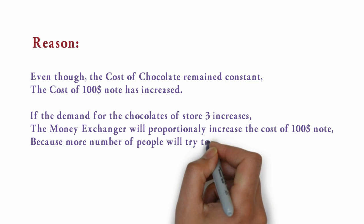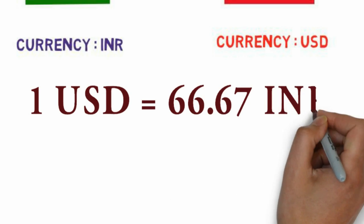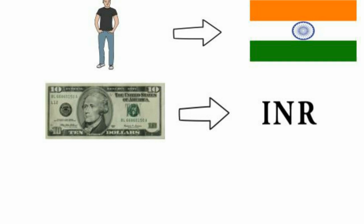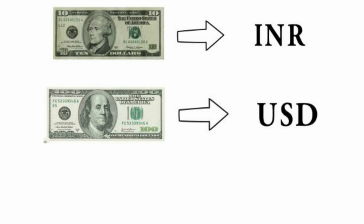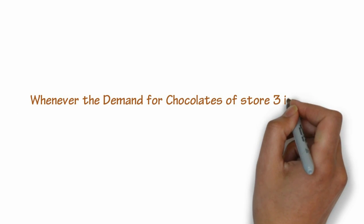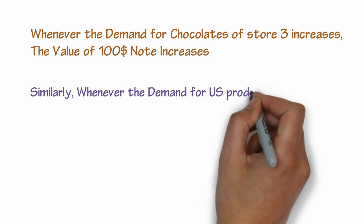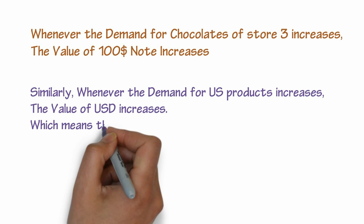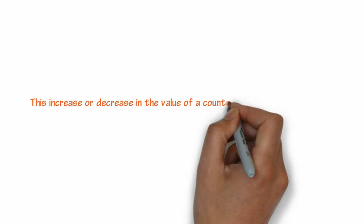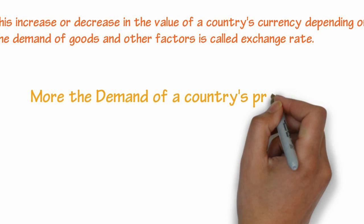Because more people will try to buy the $100 note. Let's apply this concept to two countries: India and USA. Whenever the demand for the chocolates of Store 3 increases, the value of the $100 note increases. Similarly, whenever the demand for US products increases, the value of the US dollar increases, which means that more INR has to be given in exchange for USD. This increase or decrease in the value of a country's currency depending on the demand of goods and other factors is called the exchange rate. The more the demand for a country's products, the more is the value of that country's currency.